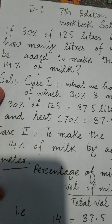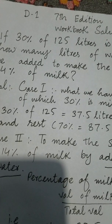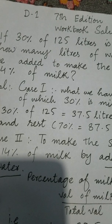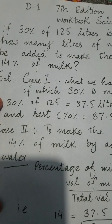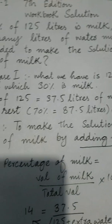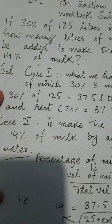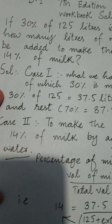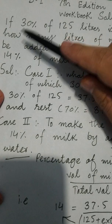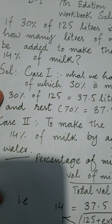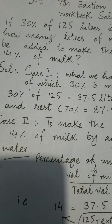Total solution is 125 liters. There is water and milk, and milk is 30%. Now this solution we have, milk percentage is 14%. From 30% to 14%, so how much extra water must be added?